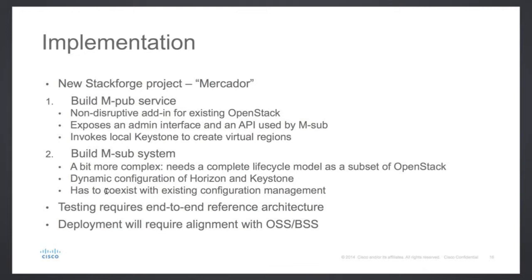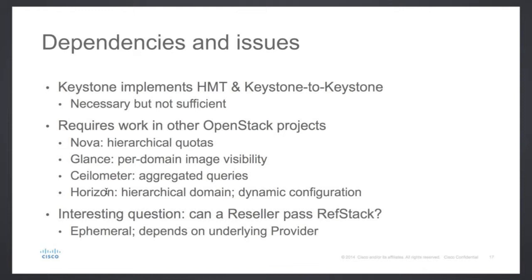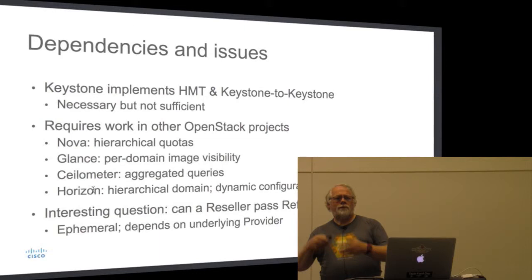We are about to launch a StackForge project, code-named Mercado — which is the Portuguese for merchant — to build these services. We want to do it in StackForge so that we can build on it without disrupting the work done in Keystone and other parts of OpenStack over the last cycle. We will build on the hierarchical multi-tenancy work and the Keystone-to-Keystone authentication work. It's going to require work in other OpenStack projects as well. We've introduced hierarchical multi-tenancy in Kilo, but most of the rest of OpenStack is not yet HMT-aware, so we're going to need to work on hierarchical quotas in Nova and aggregated queries in Ceilometer. And Ceilometer and Horizon are going to have to adapt to present these views to end users.